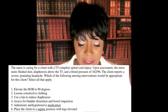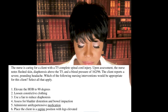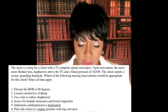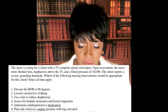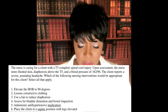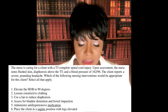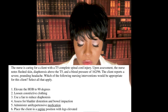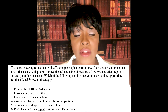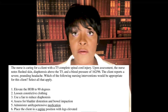The nurse is caring for a client with a T5 complete spinal cord injury. Upon assessment, the nurse notes flushed skin, diaphoresis above T5, blood pressure of 162 over 96, and the client reports a severe pounding headache. Which of the following nursing interventions would be appropriate for this client? Select all that apply.